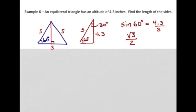So whenever you have a value like that that you don't need the calculator for, you shouldn't use the calculator to find it. You should just go with square root of 3 over 2. And then this is equal to 4.3 over S.